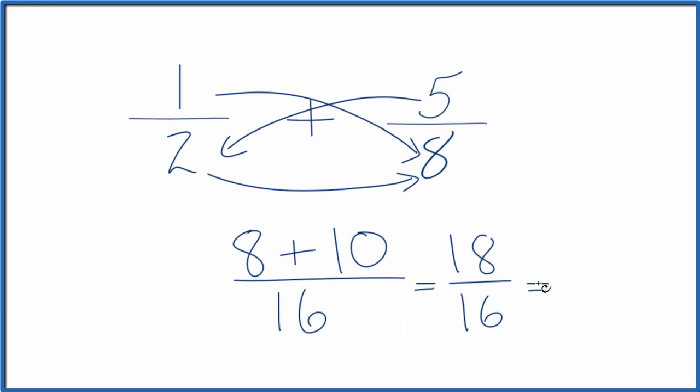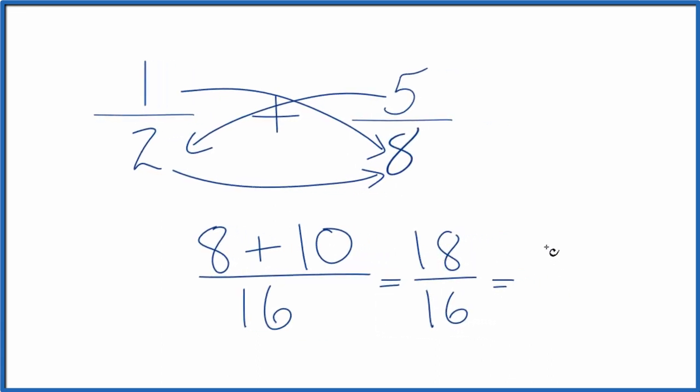These are both even. We can divide them by two. Eighteen divided by two is nine. Sixteen divided by two is eight. And that's what we got before.